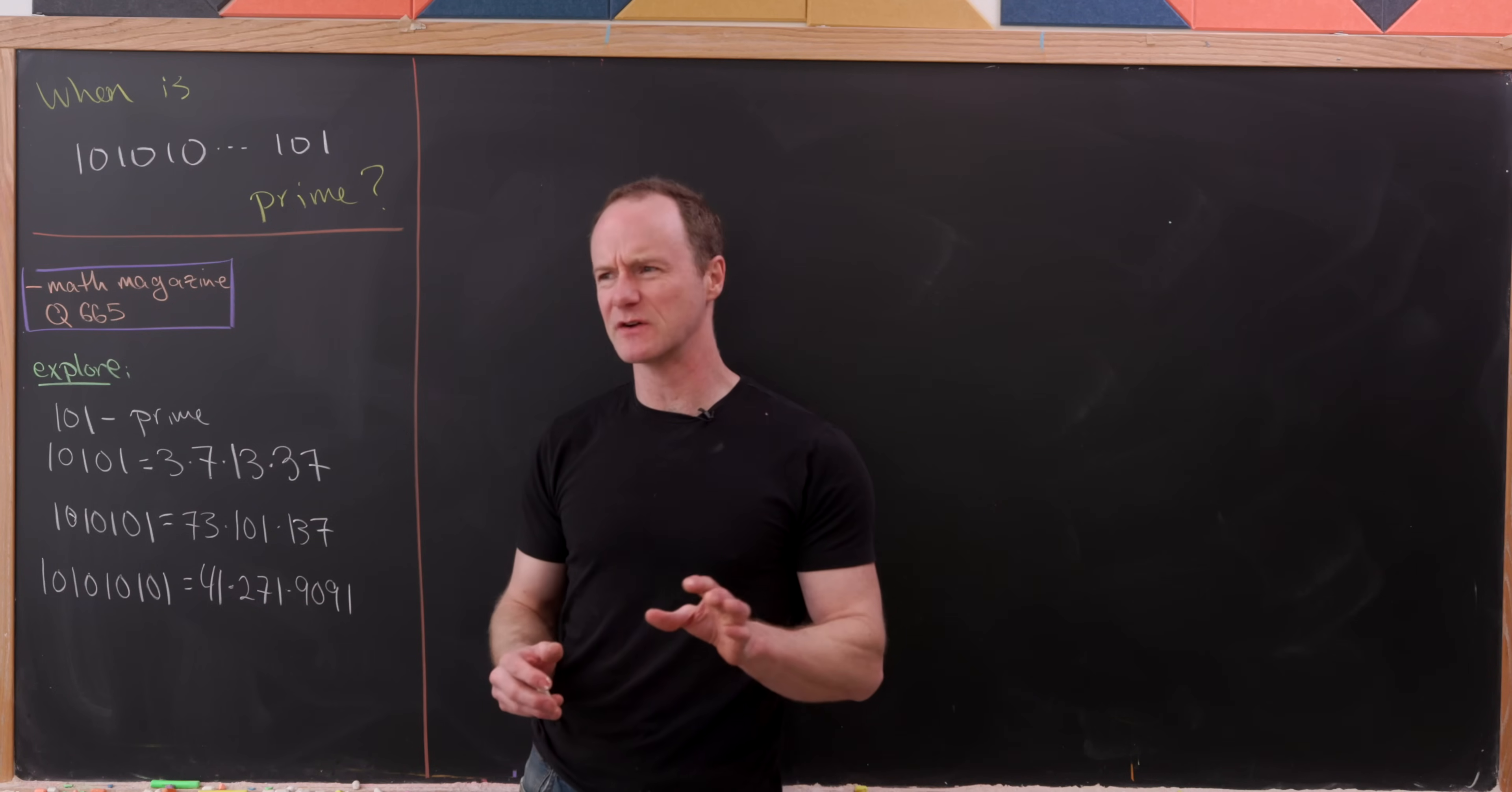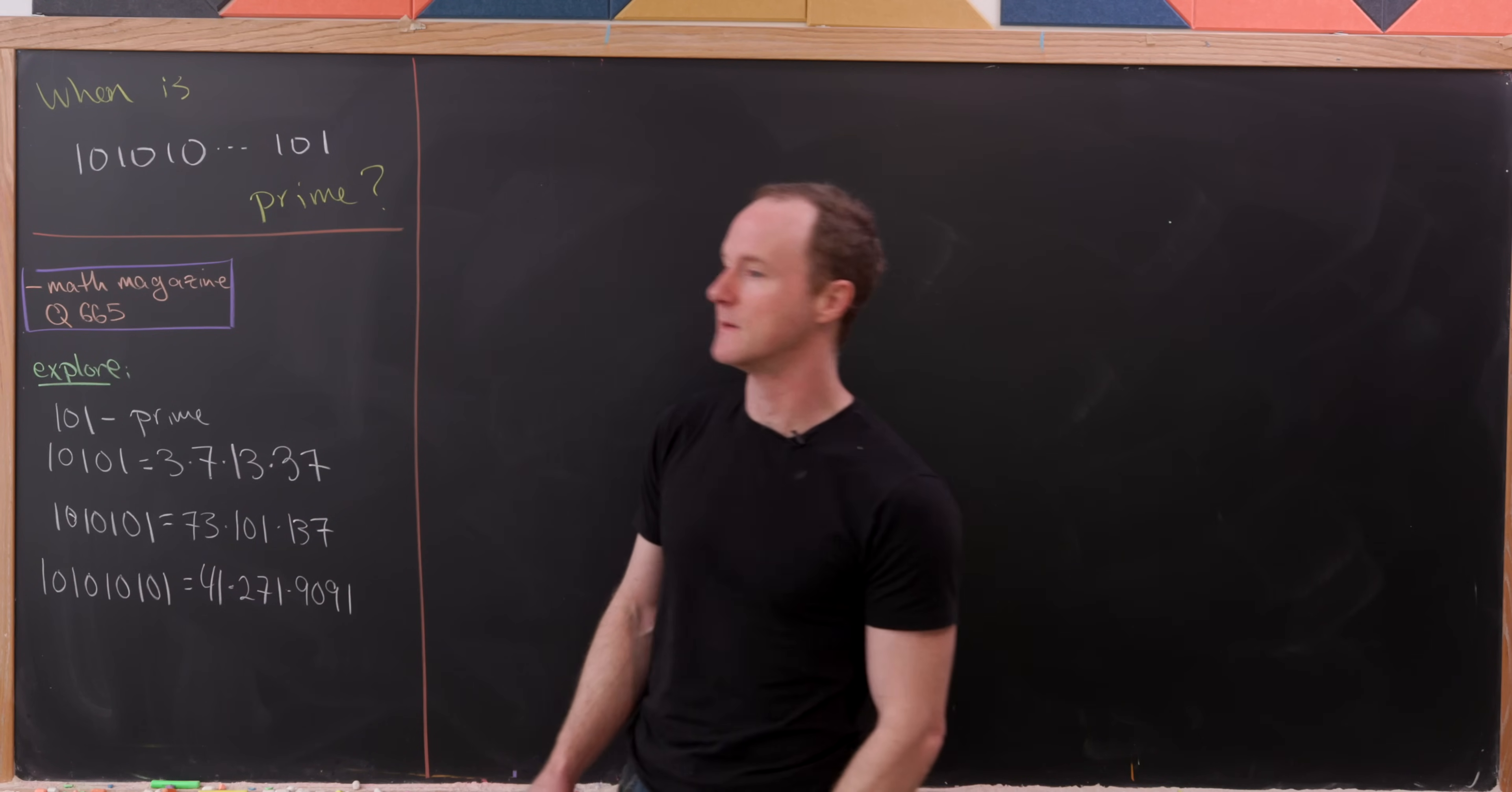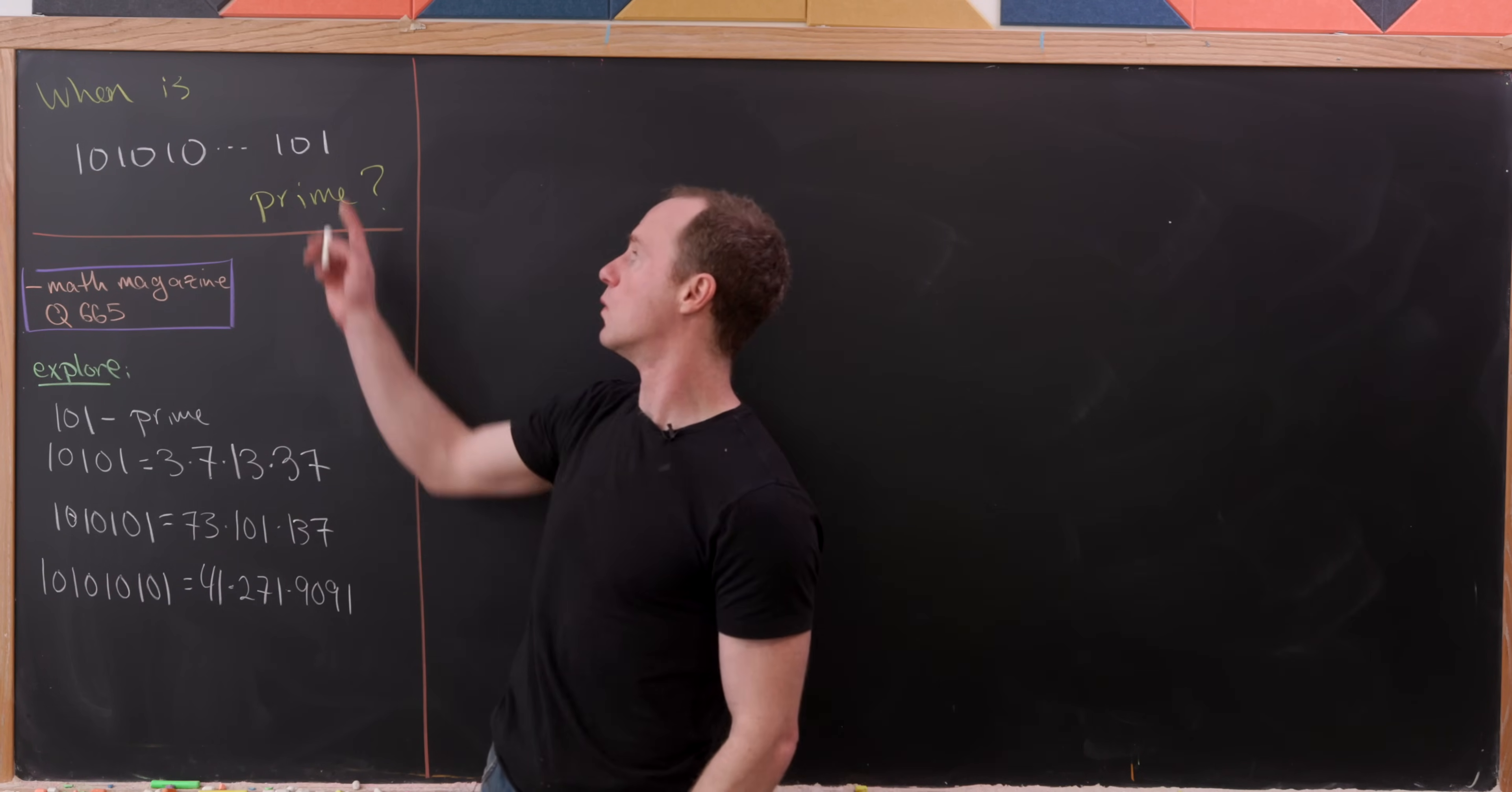Let's observe that it can't end in a 0 and be prime, because then it would be divisible by 2 and 5, or in other words 10, so it must end in a 1. So the number is of the form 101010, and so forth, 101.